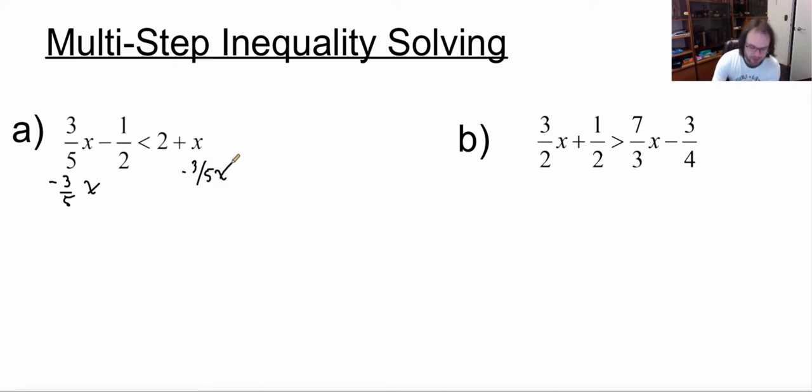Now this is the same here, 1x is the same as 5 over 5, because we're subtracting fractions. So that's going to end up giving me negative 1 over 2 must be less than 2, and 5 minus 3 is going to be plus 2 over 5x.